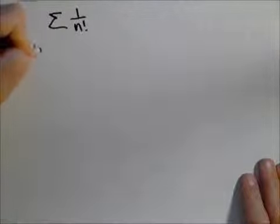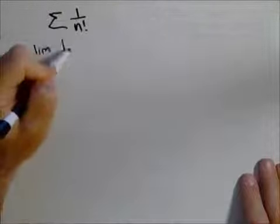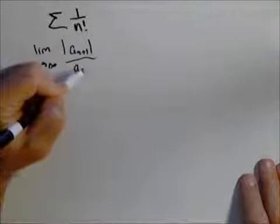What we're going to do is we're going to look at the limit as n goes to infinity of the absolute value of a sub n plus one over the absolute value of a sub n.